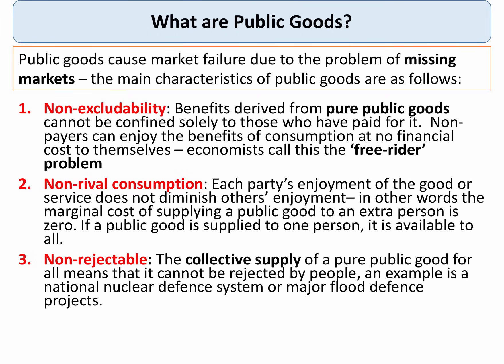The third characteristic is non-rejectability. The collective supply of a public good means that people can't reject it. A good example is a national nuclear defence system or a major regional flood defence project. So public goods are non-excludable, non-rival in consumption, and non-rejectable, whereas private goods are excludable, rival in consumption, and rejectable.